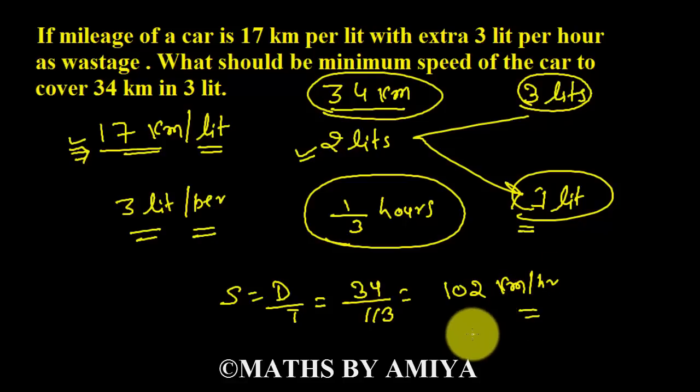I hope it is clear. If you have mileage and wastage and you need to find the minimum speed, first work on normal mileage, that is km per litre. From this you will get your consumption and you have 3 litres of petrol, so the remaining is 1 litre. This remaining works on the wastage. The wastage decides the time.